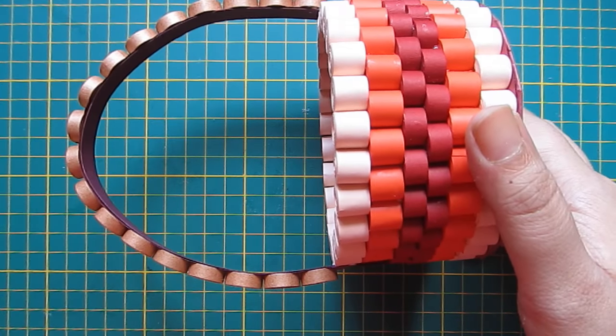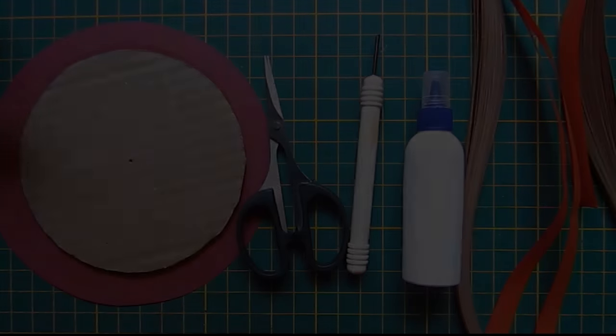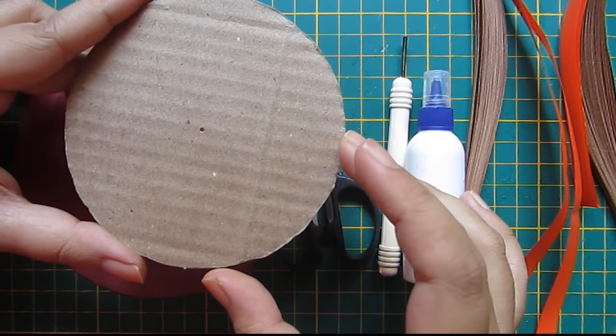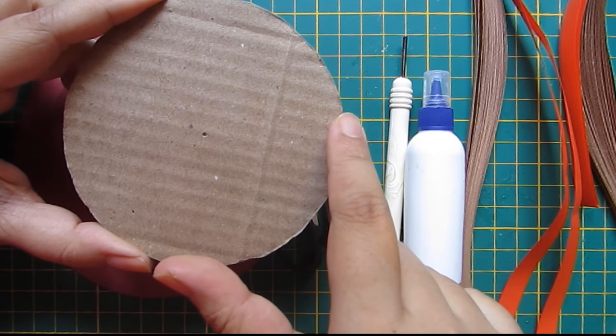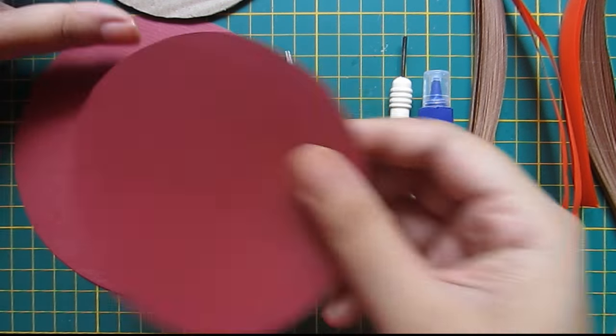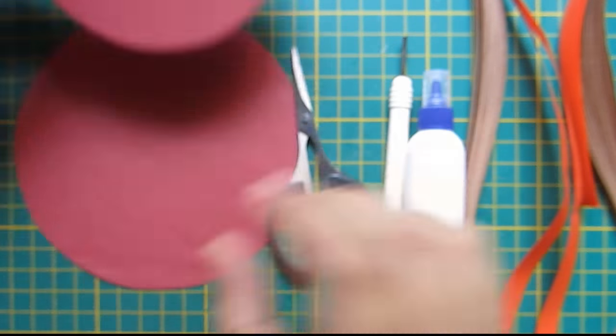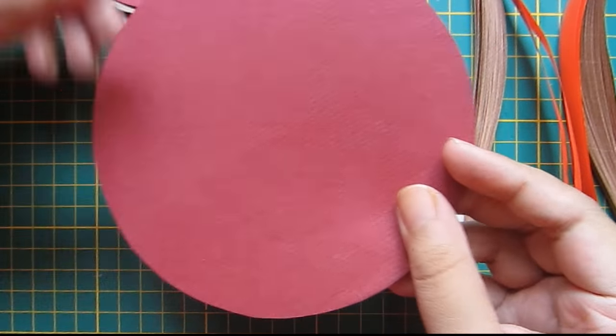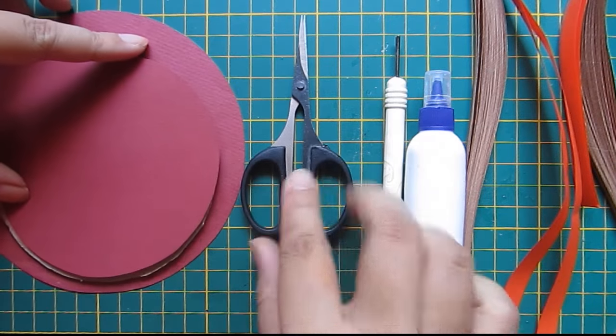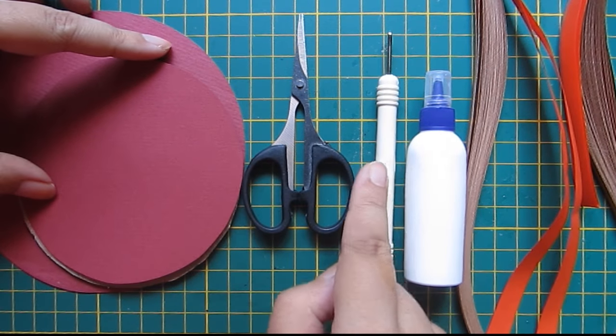So let's get started. For this we need one cardboard circle - the diameter of this circle is four inches - one paper circle of the same size as that circle and one little bigger circle, one scissor, quilling tool, liquid glue...